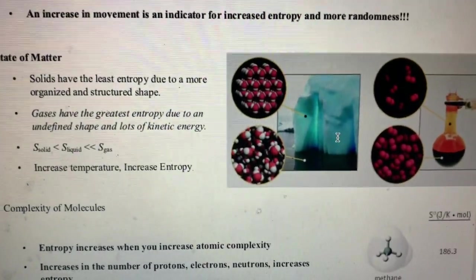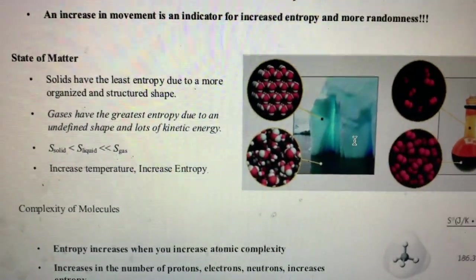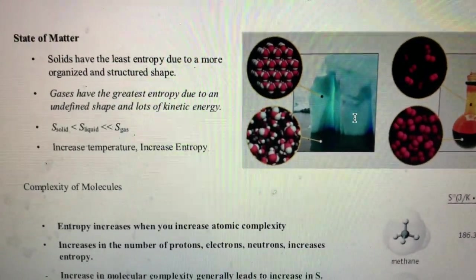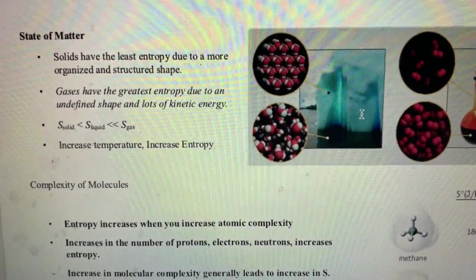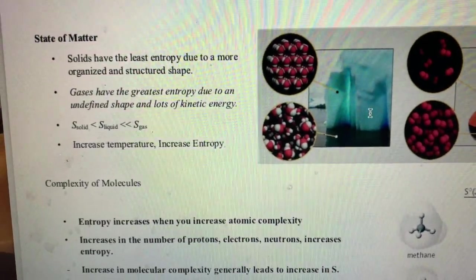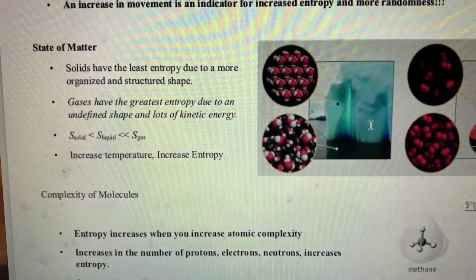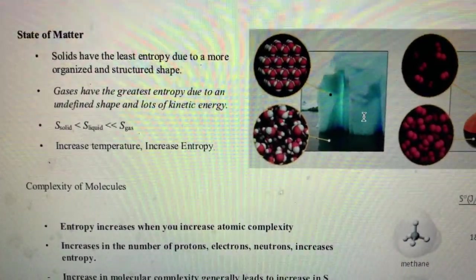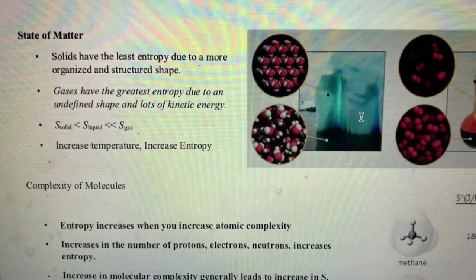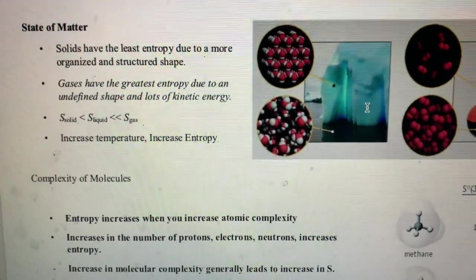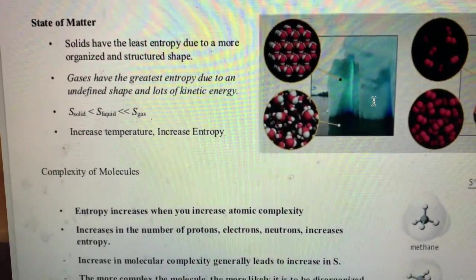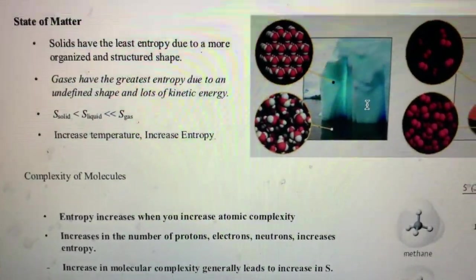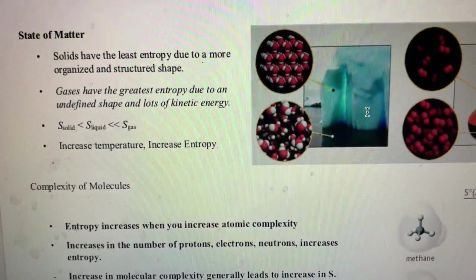This one's nice and straightforward because we can get a good visual of disorder or randomness when it comes to states of matter. Solids are very ordered, they have a lot of structure, so they actually have very low entropies. As opposed to a gas, which we know all about gases - gases move wherever they want to move, so they have very high entropy. And then liquid is there in the middle.